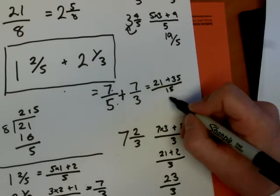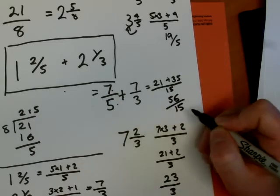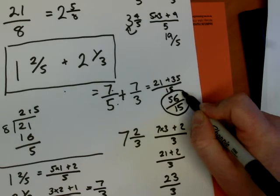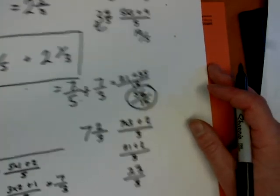21 and 35 is 56. The answer in its improper form is 56 over 15. I'm going to write this out a bit more neatly for you on another page.